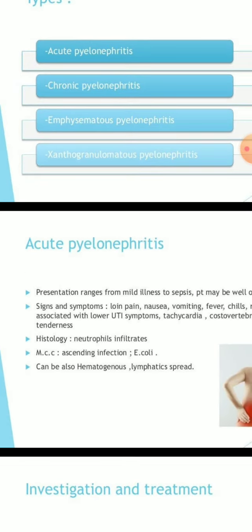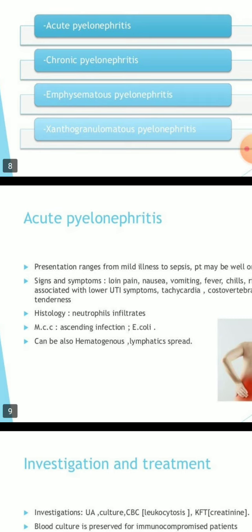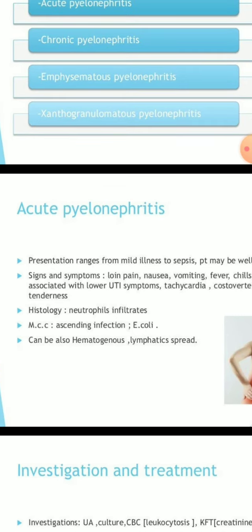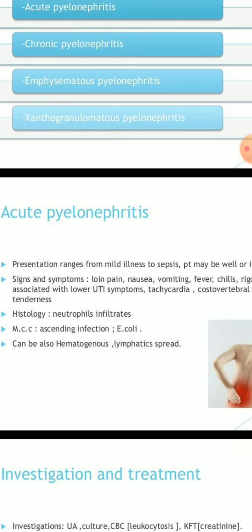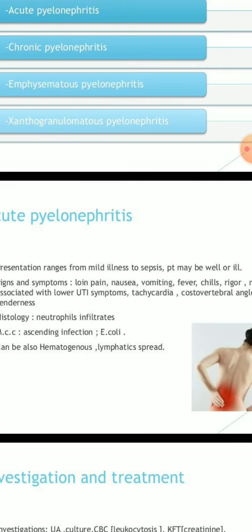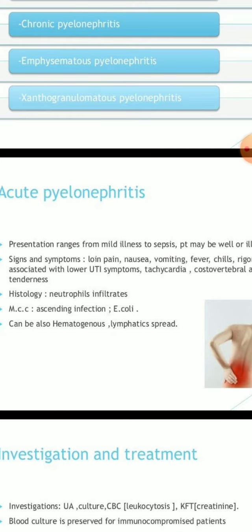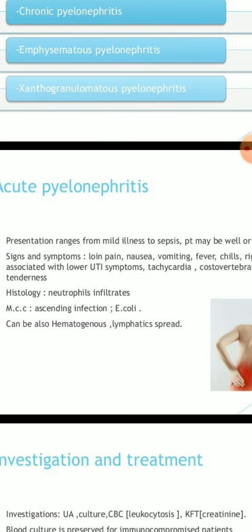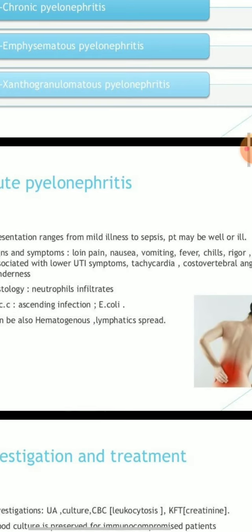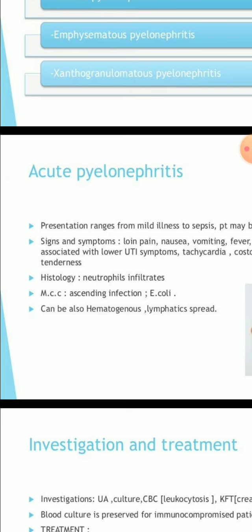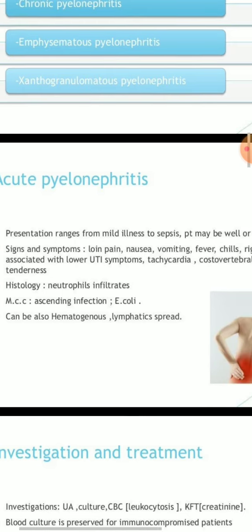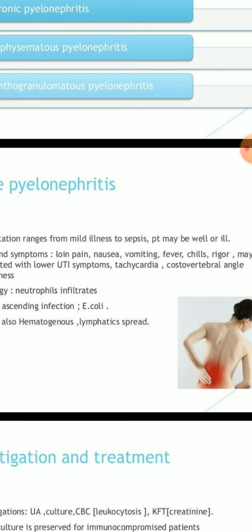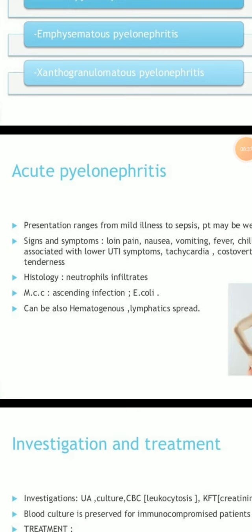Acute pyelonephritis: presentation ranges from mild illness to sepsis. The patient may be well or ill. Signs and symptoms include flank pain, nausea, vomiting, fever, chills, rigor — may be associated with lower UTI symptoms — tachycardia, and costovertebral angle tenderness.